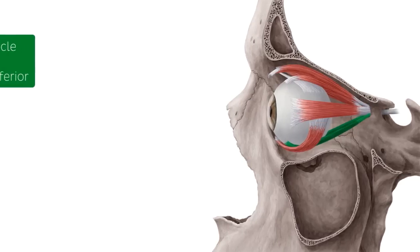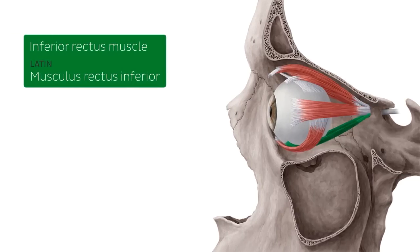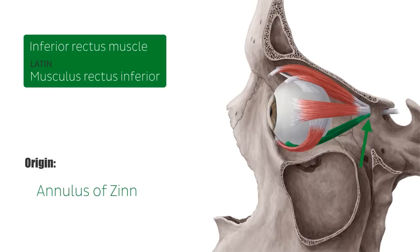The inferior rectus muscle is one of six extraocular muscles of the eye that control eye movement. The inferior rectus is a straight muscle that originates from the common tendinous ring, also known as the annulus of Zinn, which is found at the apex of the orbit around the optic canal, indicated here by an arrow. The common tendinous ring is formed by the tendons of the rectus muscles.